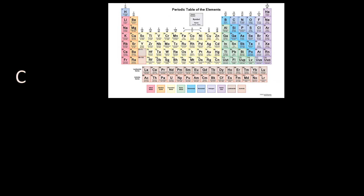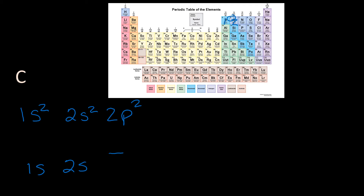Carbon is in the second energy level and it has six electrons, six protons. The first energy level has to be full, so 1s². We know that 2s² is full — that's four electrons — and so now we're into the p's: 2p². To do the box method, we have 1s, we have 2s, and the p's. We have two p electrons, and remember they don't like each other, so they're not going to share a room if they don't have to.